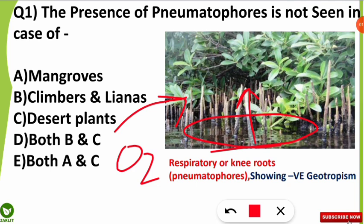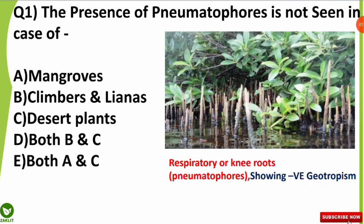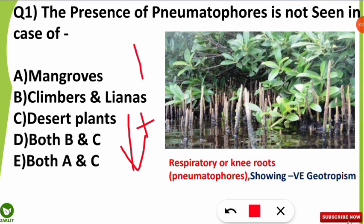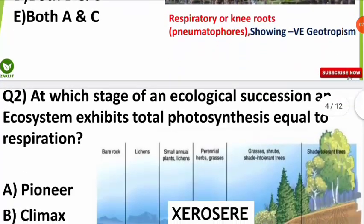These roots show negative geotropism. All plants normally show positive geotropism — 'geo' means earth, so roots go down towards the earth. But these roots come up above the ground, so they show negative geotropism. That's why they are pneumatophores — a specialized structure to gain oxygen from the atmosphere.